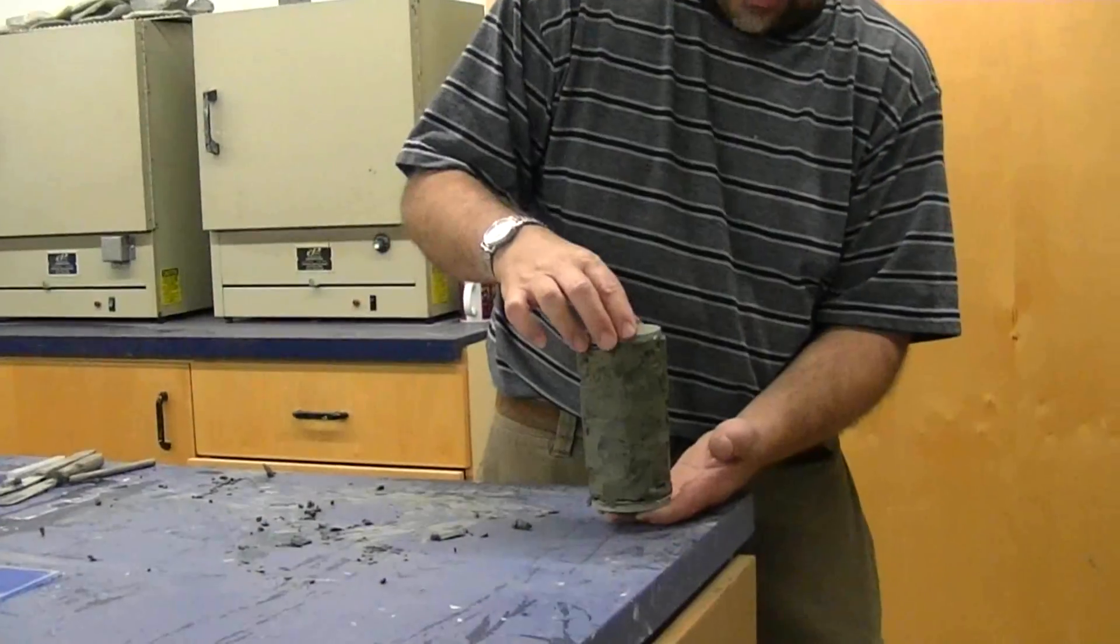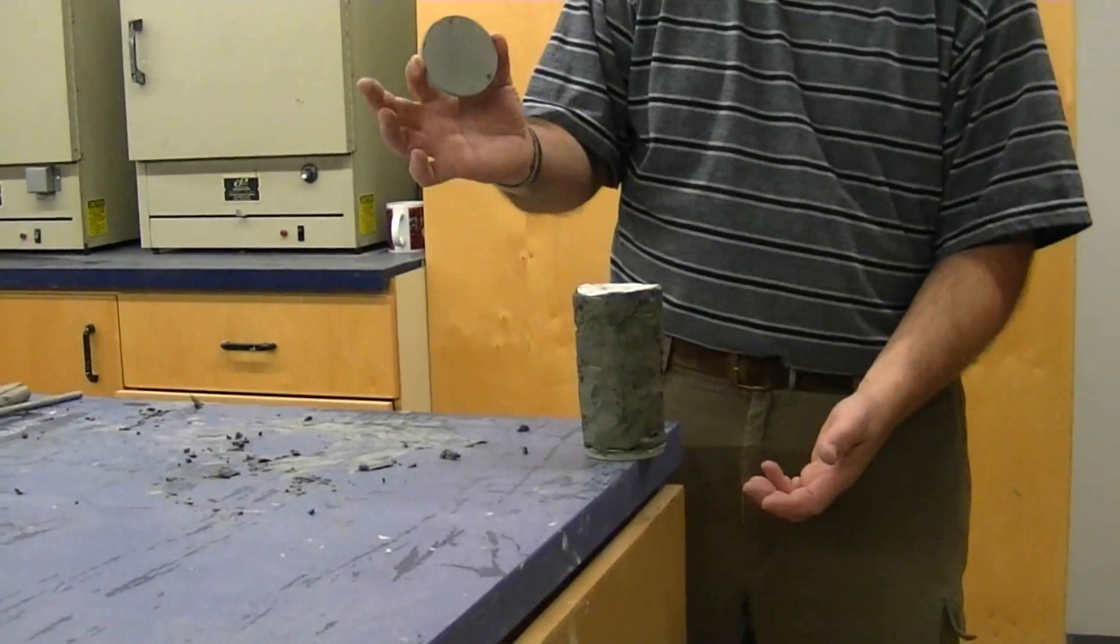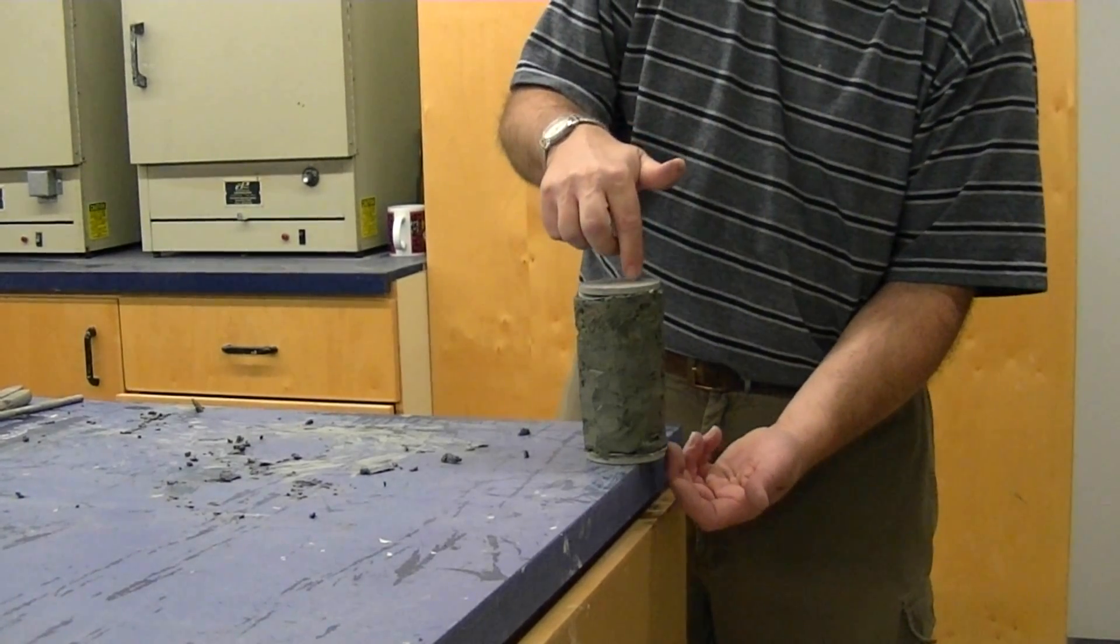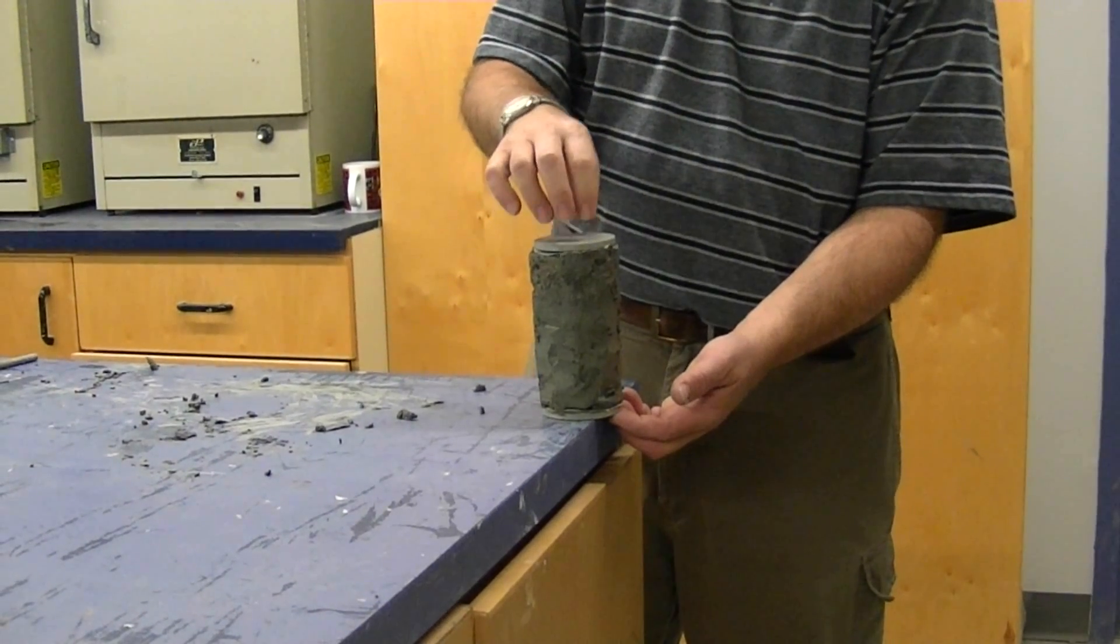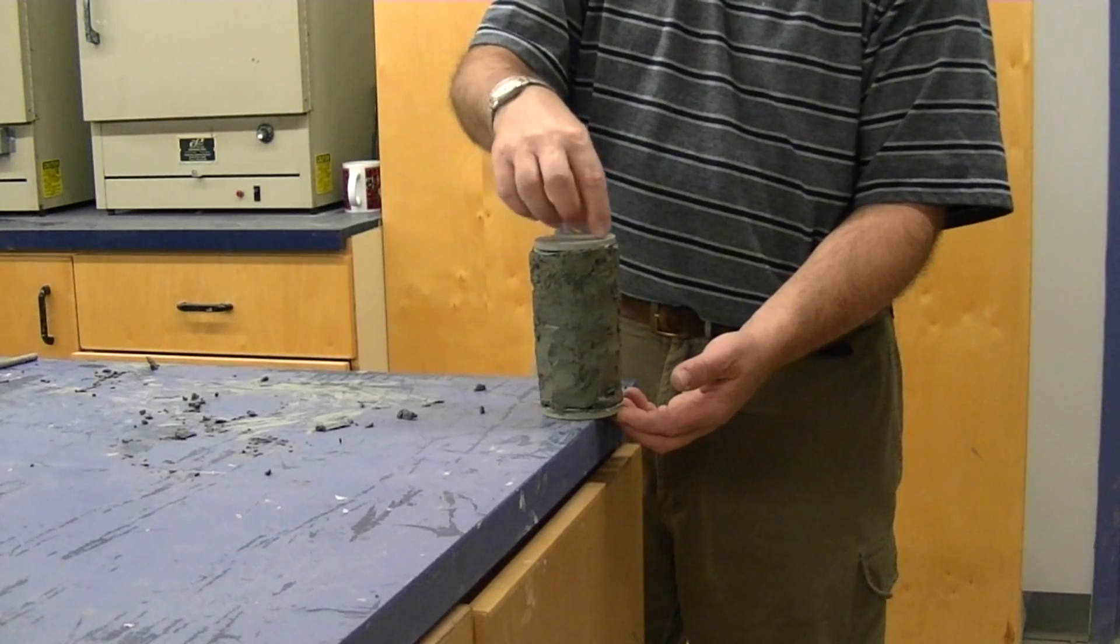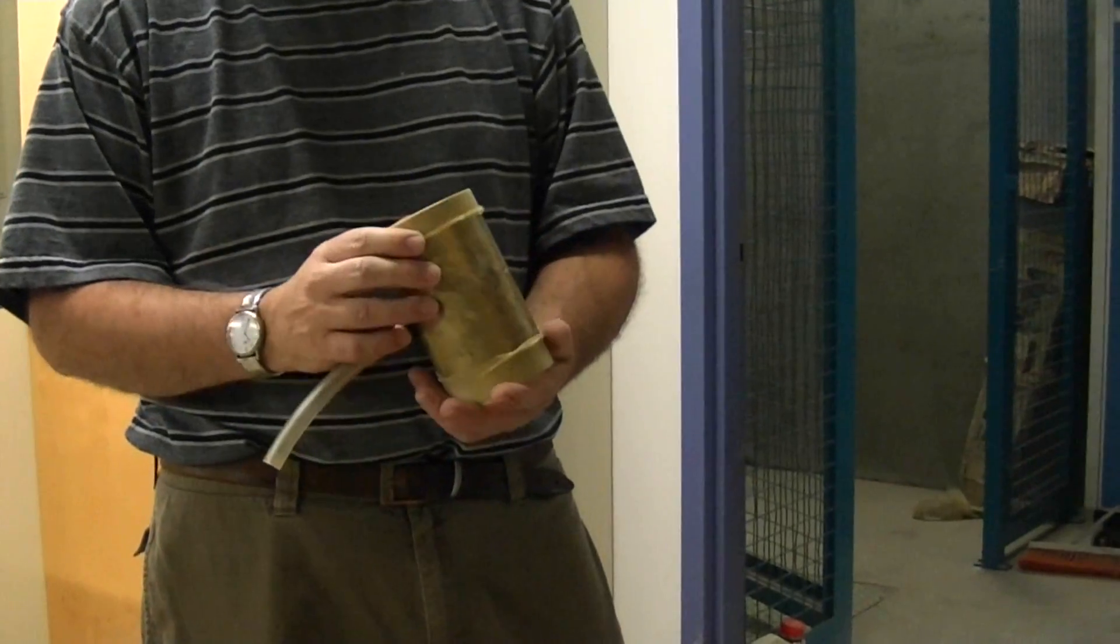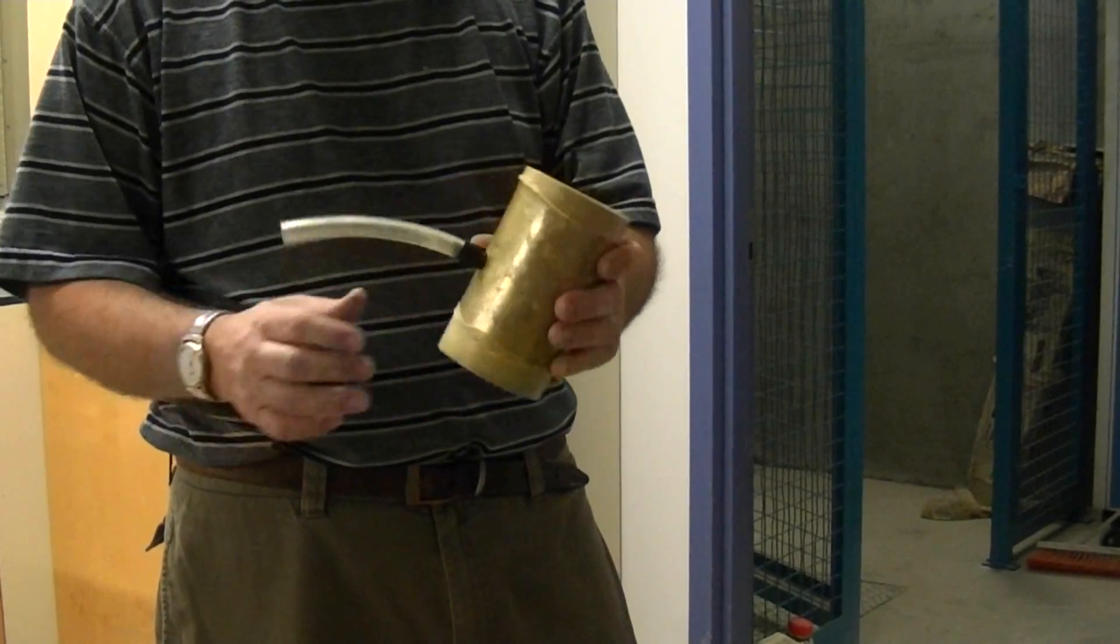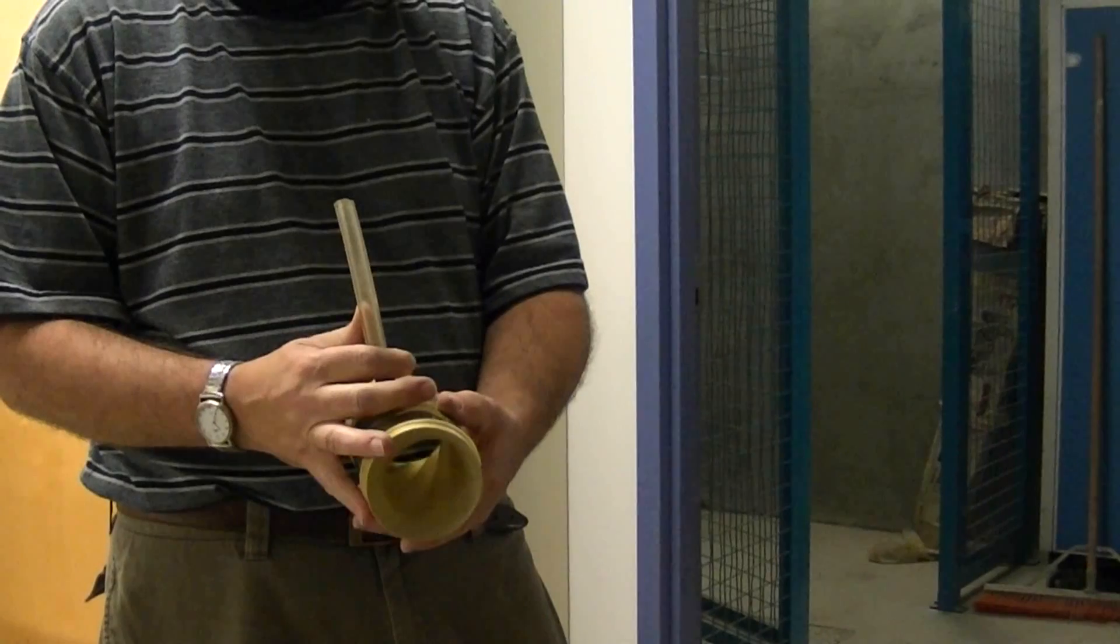Our sample has been stacked up. In the bottom we have a porous stone and a piece of filter paper on both the top and the bottom. The porous stone and the filter paper are to allow the water pressure in the system to be equalized across the entire surface. This is the membrane that goes around the sample and forms a watertight seal between the water column and the water in the sample.